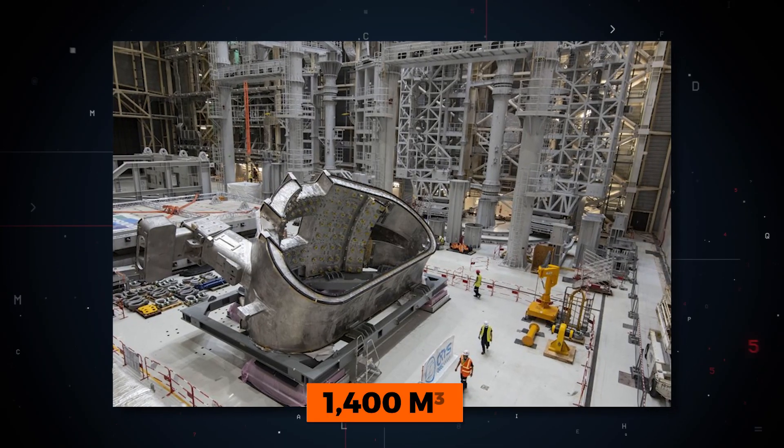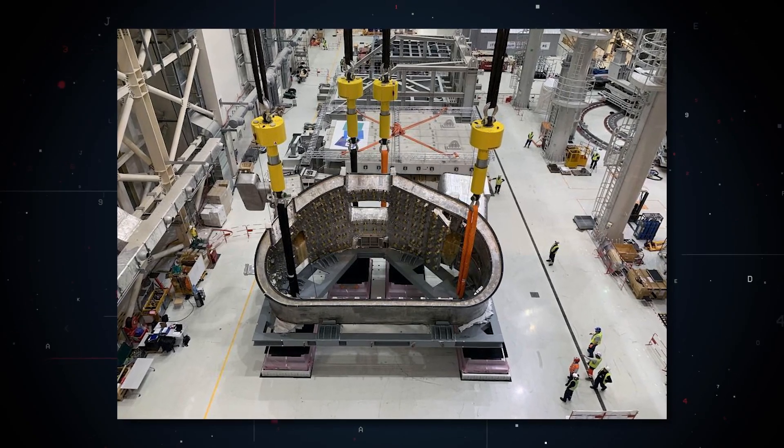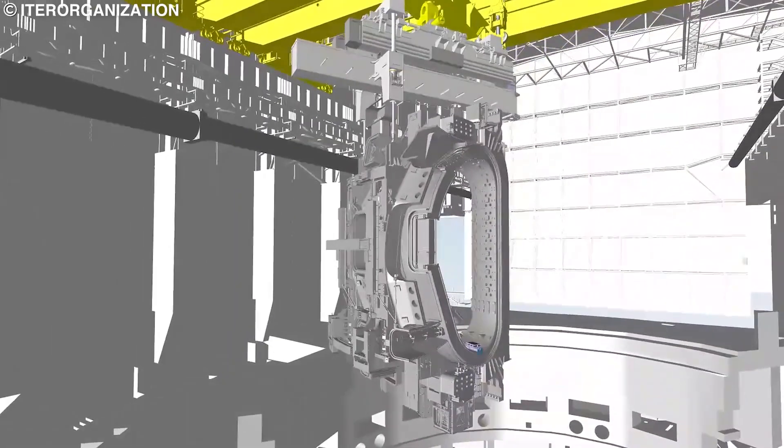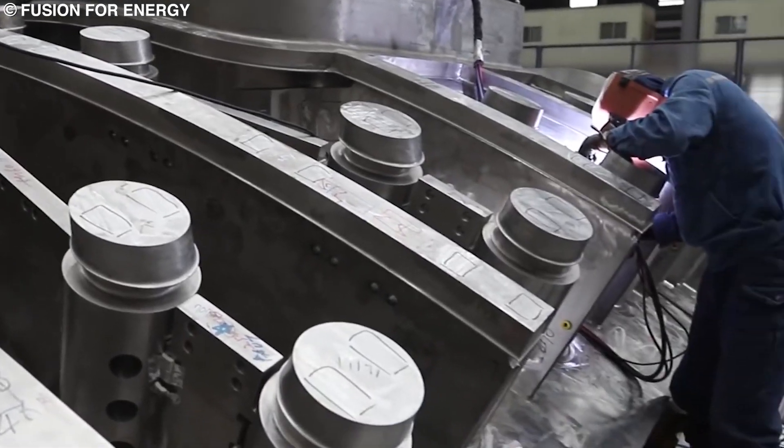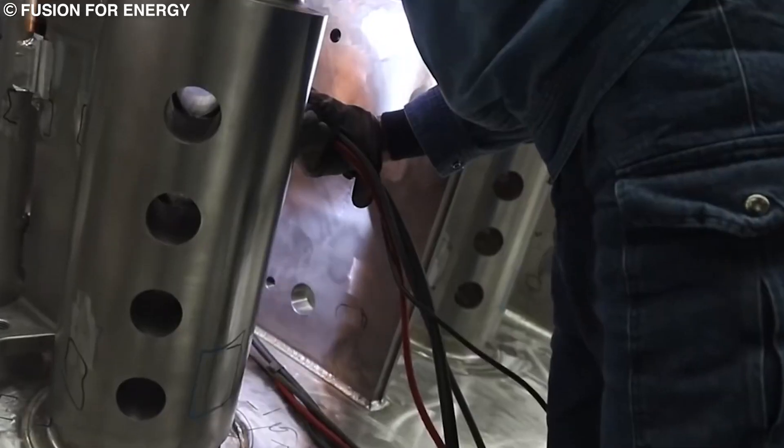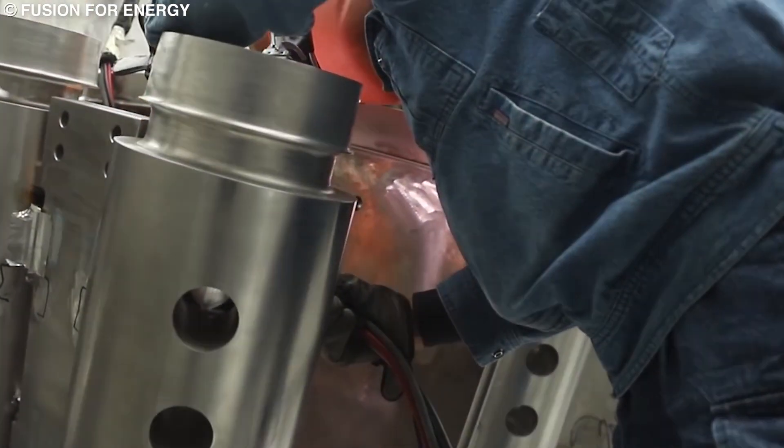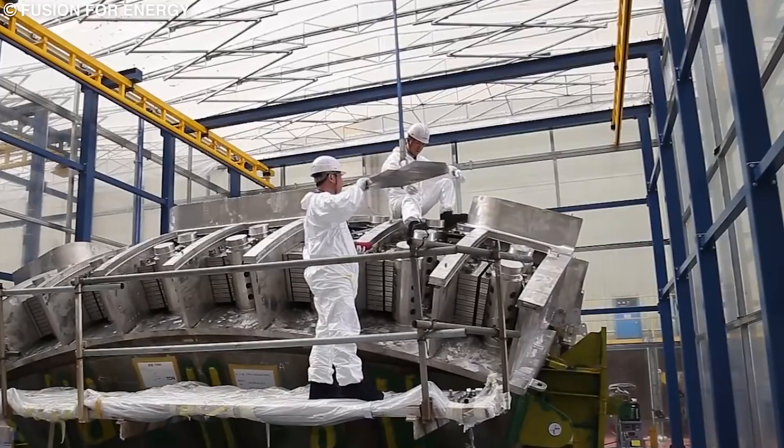With an interior volume of 1,400 cubic meters, the ITER vacuum vessel will provide an absolutely unique experimental arena for nuclear fusion physicists. As mentioned earlier, the volume of the plasma contained in the center of the vessel is going to be 10 times larger than that of the largest operating tokamak in the world today. So everything in the ITER project is literally dialed up to 10.